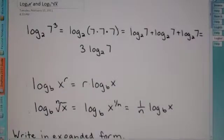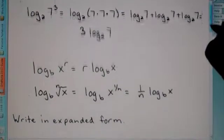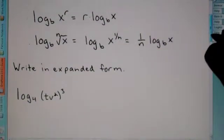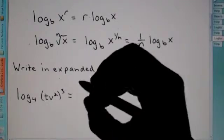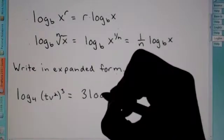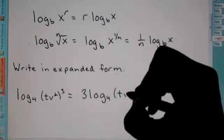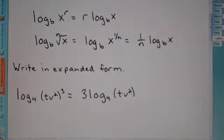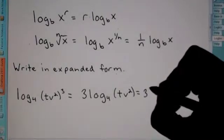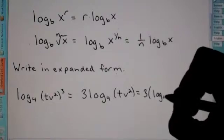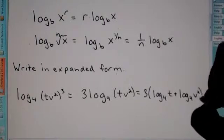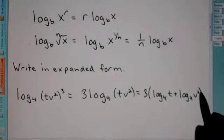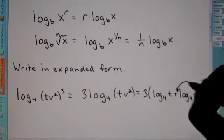So these are the two identities we're going to be dealing with for this section. It says here: write this in expanded form. We want to deal with the identity where we bring the exponent out front. So this 3 comes up front, giving us 3 times log base 4 of tv squared. But we want to expand this as much as possible, so now we have two terms inside the parentheses. We have to write those — this becomes log base 4 of t plus log base 4 of v squared.